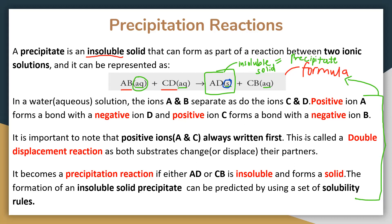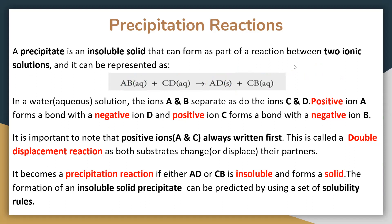Another word for precipitation reaction is double displacement reaction. The reason we call them double displacement is that the substances change or displace their partners. So AB no longer stays as AB — it becomes AD — and CD becomes CB. That's what 'double displacement' means: both substrates change or displace their partners.